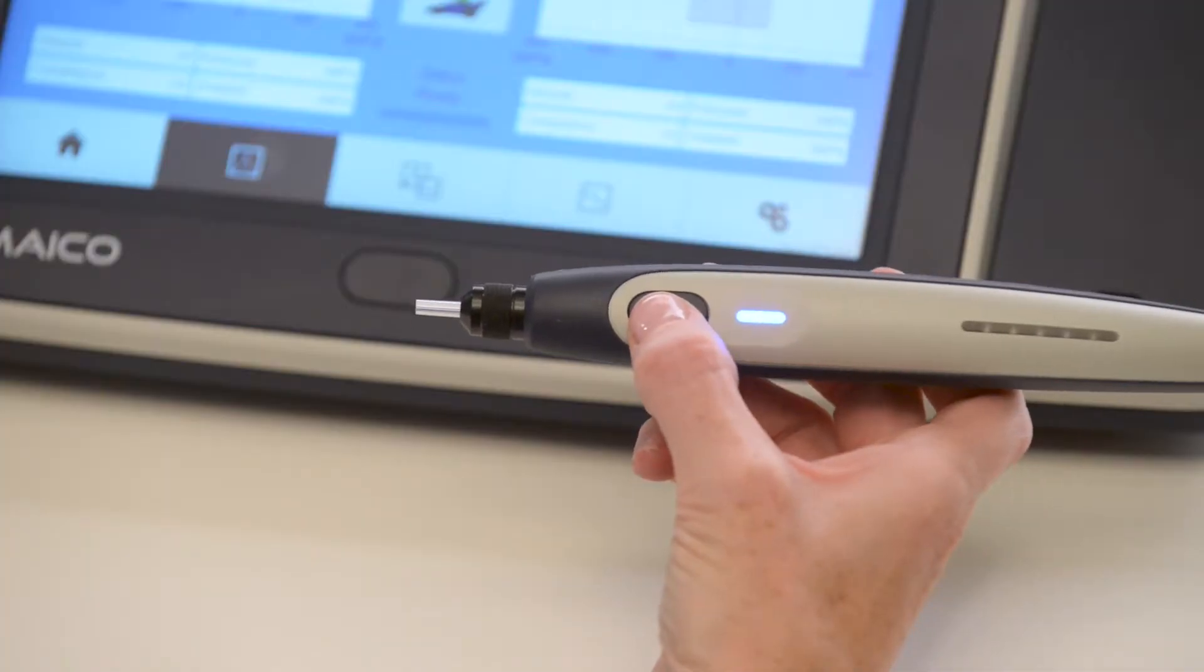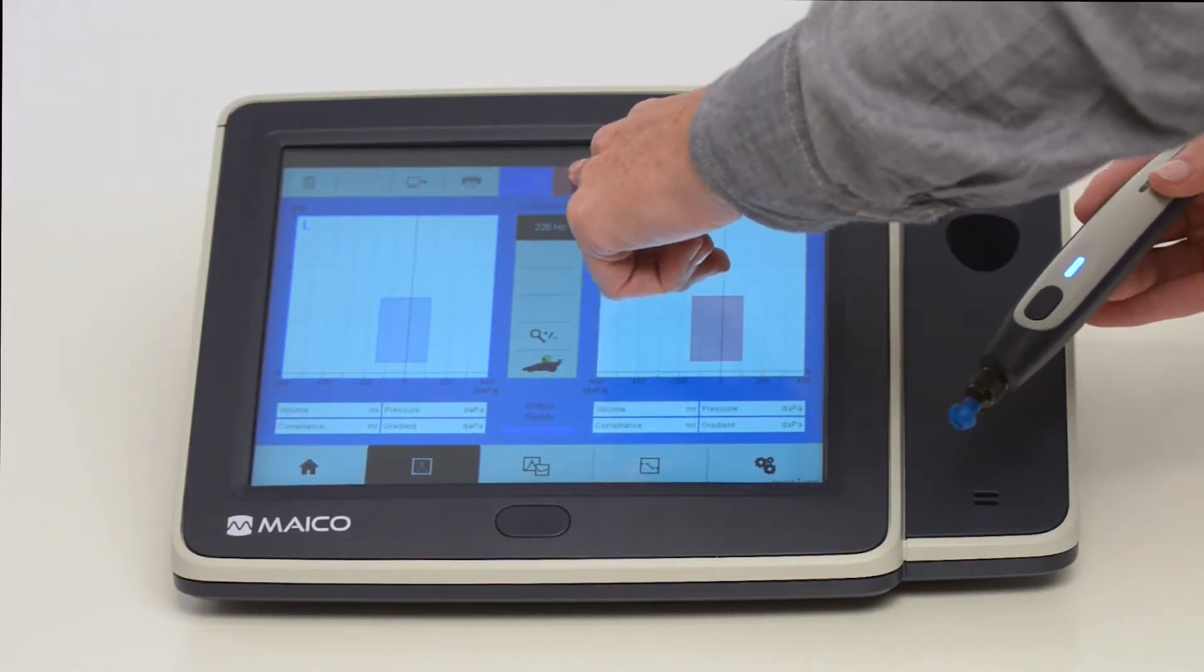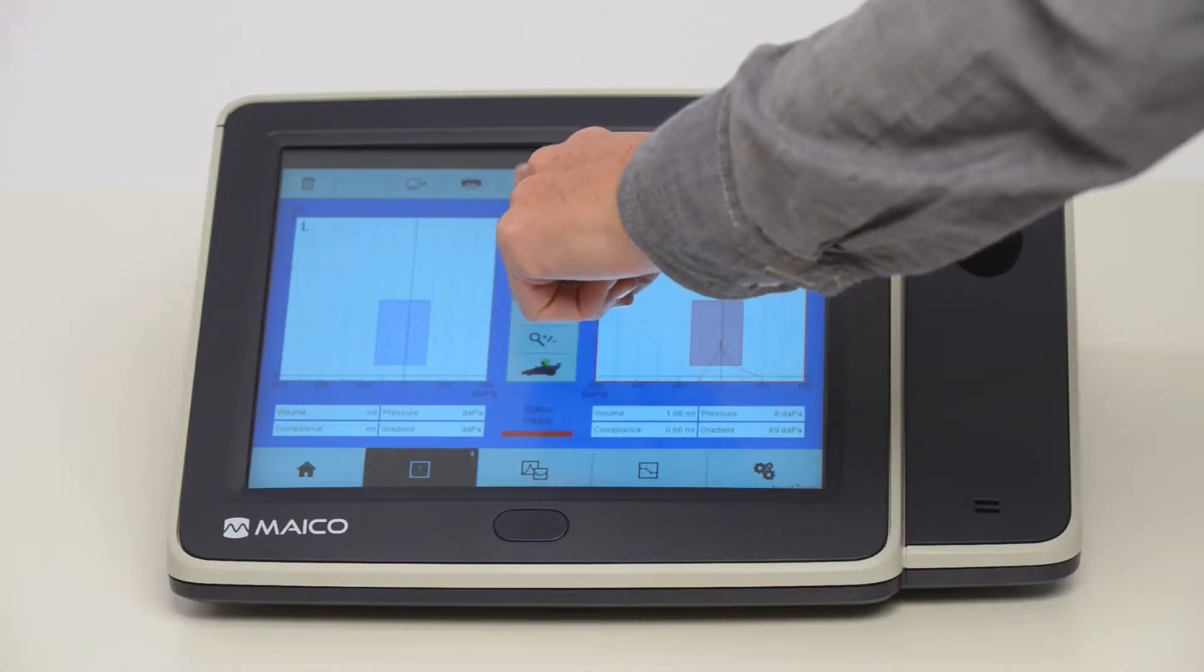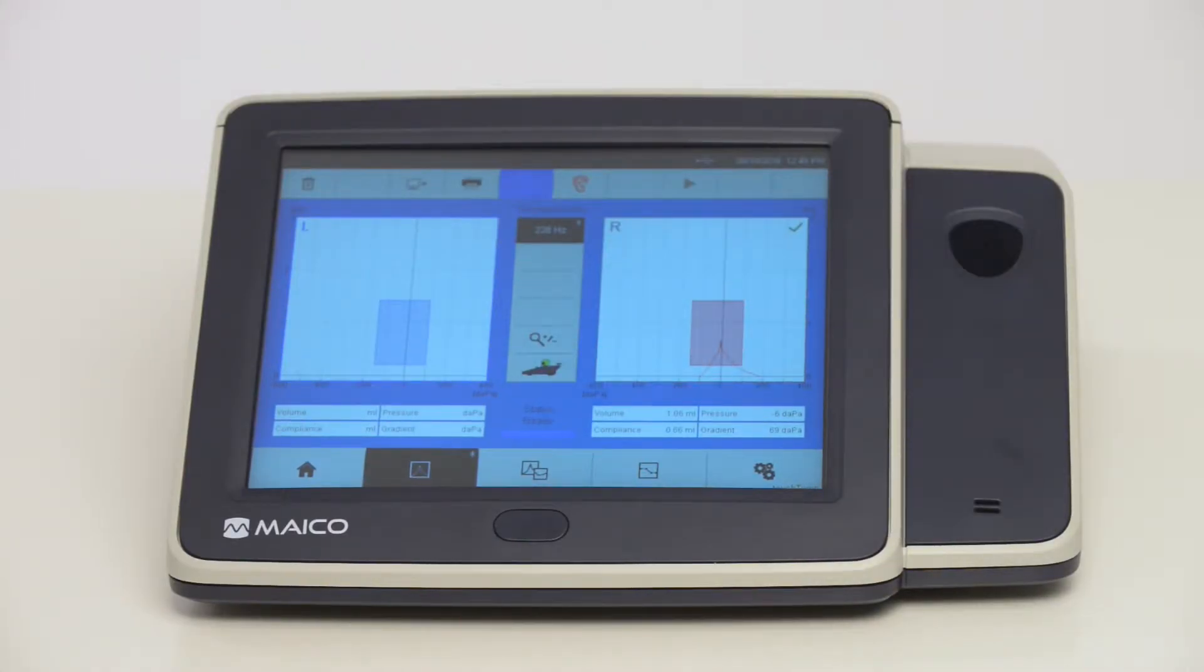Select right or left ear by pressing the button on the probe or on the screen. Red light indicates right ear, blue indicates left ear. Or select ear using the touch screen.